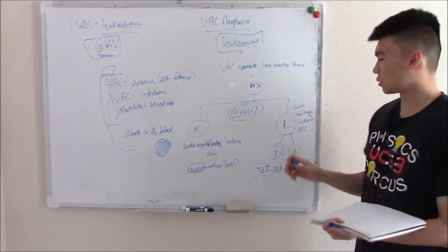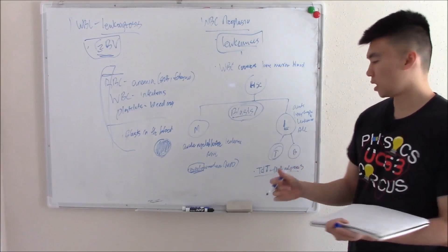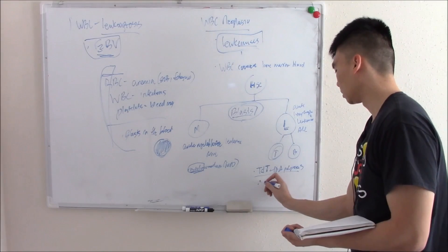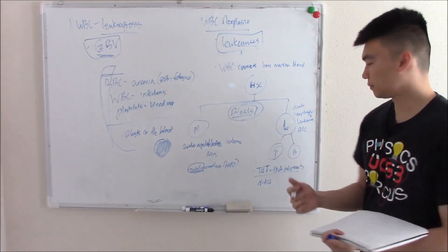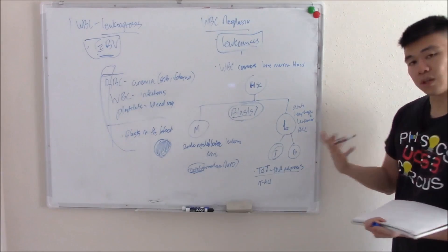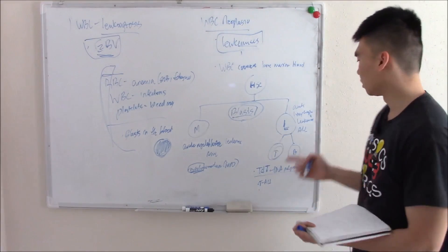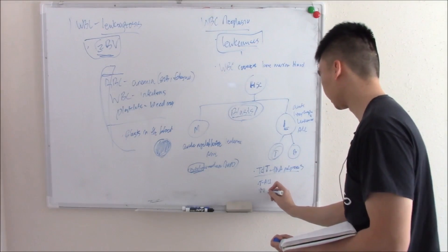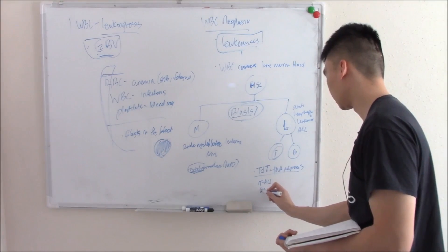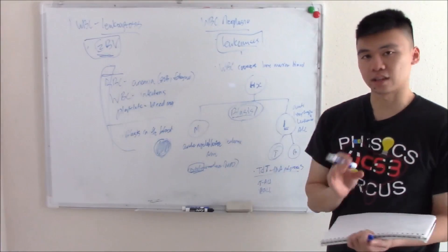Now it gets more tricky because lymphoblasts can go on to make T lymphoblasts and T acute lymphoblastic leukemia or T-ALL, or lymphoblasts can go the B route and make B lymphoblasts or B acute lymphocytic leukemia, B-ALL. These are two very different things. How are we going to tell them apart?